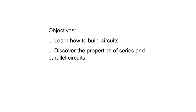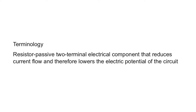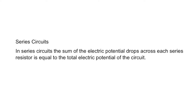Let's go over some background and terminology. A resistor is a passive two-terminal electrical component that reduces current flow, and therefore lowers the electric potential of the circuit. There are two types of ways resistors can be put together: series and parallel.